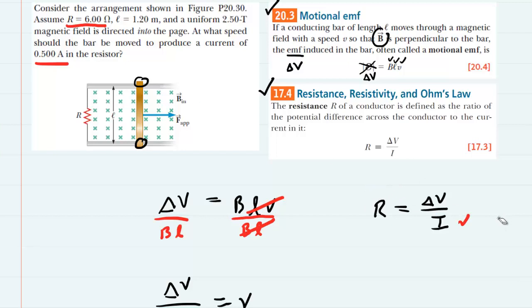So why don't we solve this equation for delta V? We can multiply both sides by current. Current cancels on the right. We can see that current times resistance is equal to delta V.